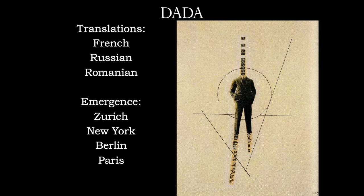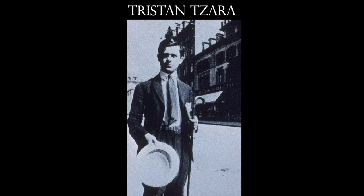The name Dada is unique because it means different things in different languages — in French it allegedly translates to 'hobby horse,' in Russian Dada means 'yes, yes,' in Romanian 'no, no,' and in English it sounds like baby talk. Dada is also unique because it emerges from different cities simultaneously: Zurich, New York, Berlin, and Paris, each with their own unique style.